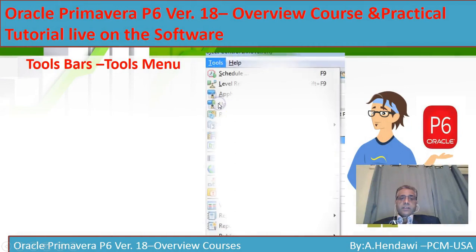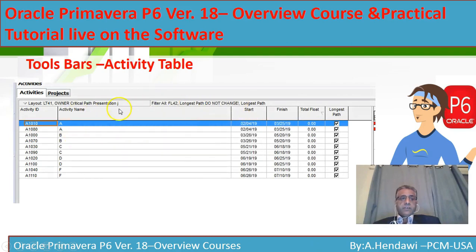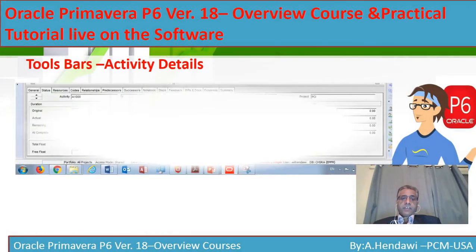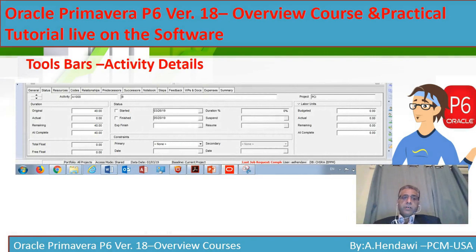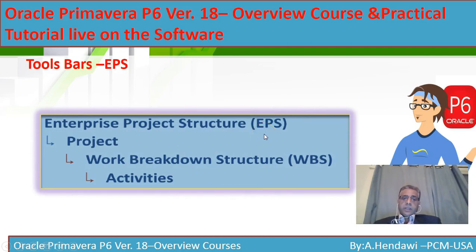The activity table explains the details of each activity — from the Activity ID numeric identifier, activity name, start, finish, total float, and along the right side is the bar chart area showing the graphical representation of your activities. Below the table you can apply details from General, Status, Resources, and Tools tabs. The EPS is the highest level in the project or company hierarchy.